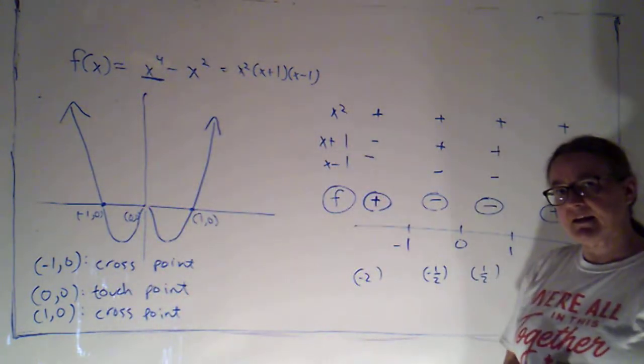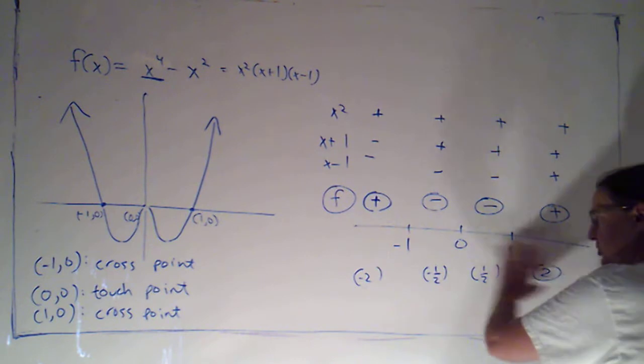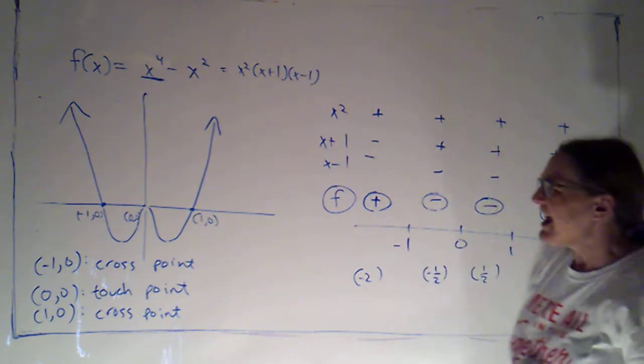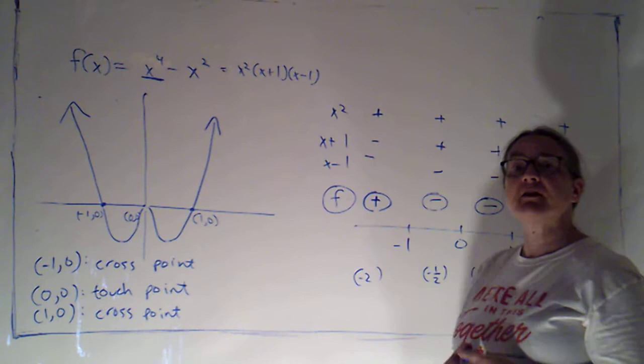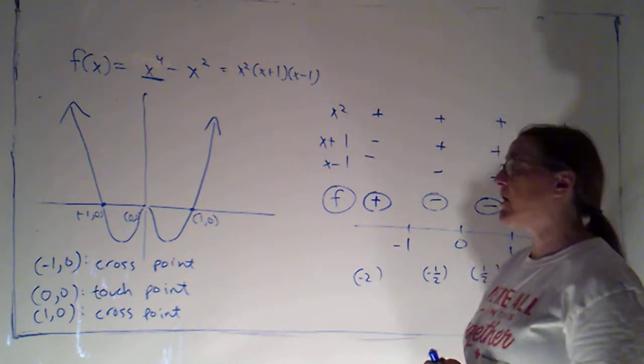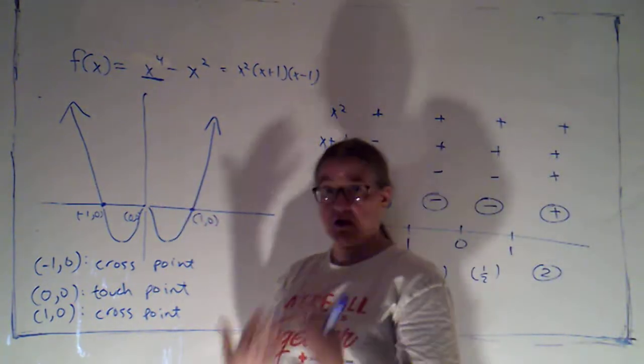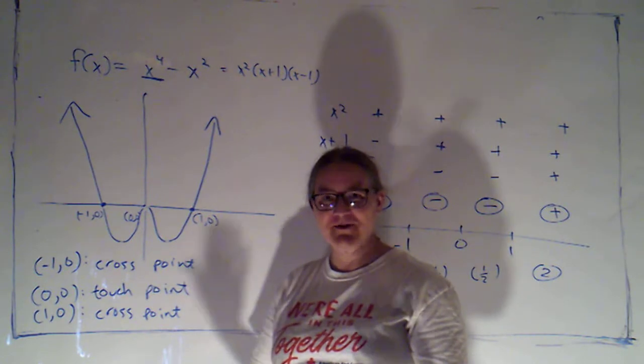Now, I want to see if there's a way, other than creating this number line and checking the sign, that I can tell whether a zero is going to correspond to an x-intercept that's a touch point or a cross point. And there is.